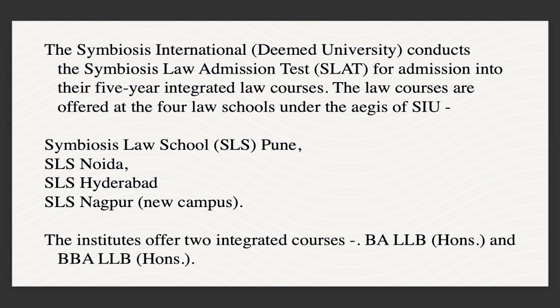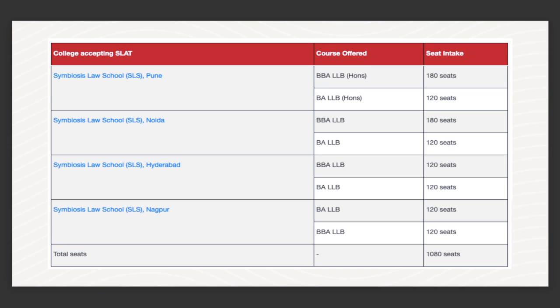Symbiosis currently offers five-year integrated courses — BBA LLB and BA LLB. There are four Symbiosis Law Schools located in Pune, Noida, Hyderabad, and Nagpur, which is their new campus. Most students aim to get into the Pune branch, as it has a good ranking — in fact, it ranks close to the top-ranking NLUs and above many lower-ranking NLUs. The total number of seats in Pune and Noida is around 300.